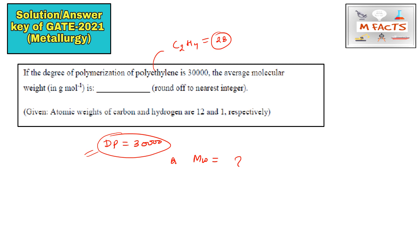We need to find for the polyethylene. So Mw will be equals to dp multiplied by this molecular weight for one monomer of this polymer. That will be 28. So Mw will be equals to 840,000. So this is the correct answer for this question.